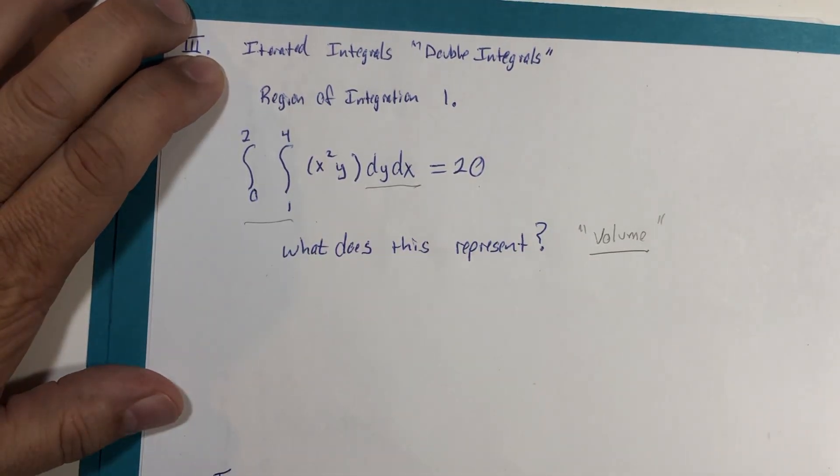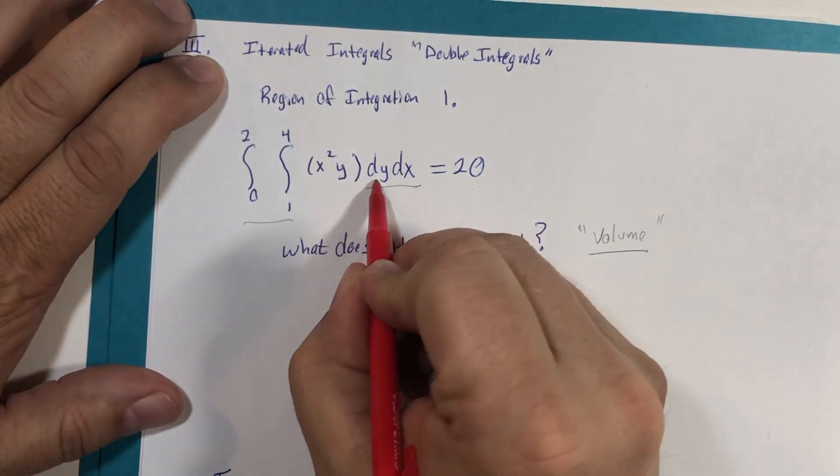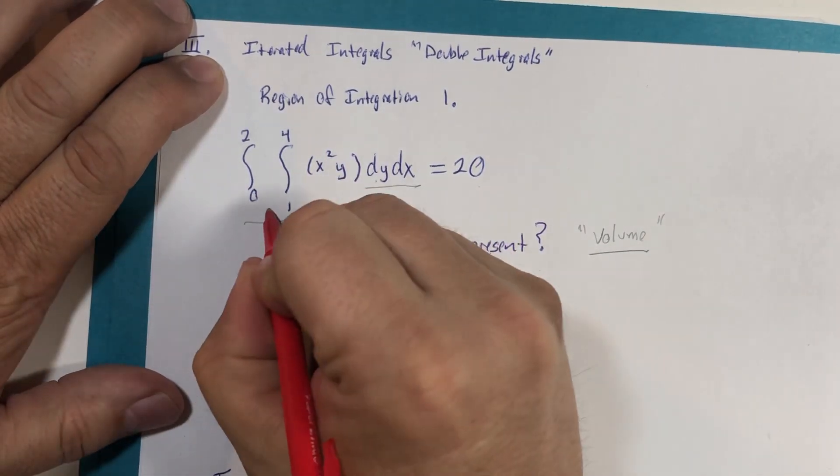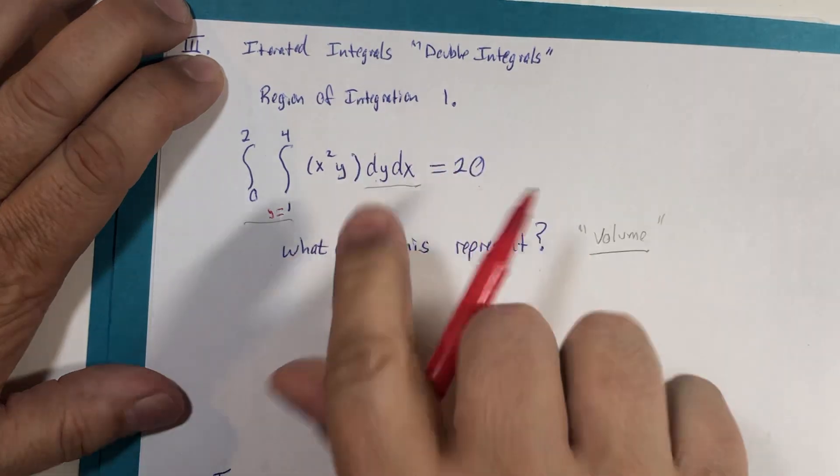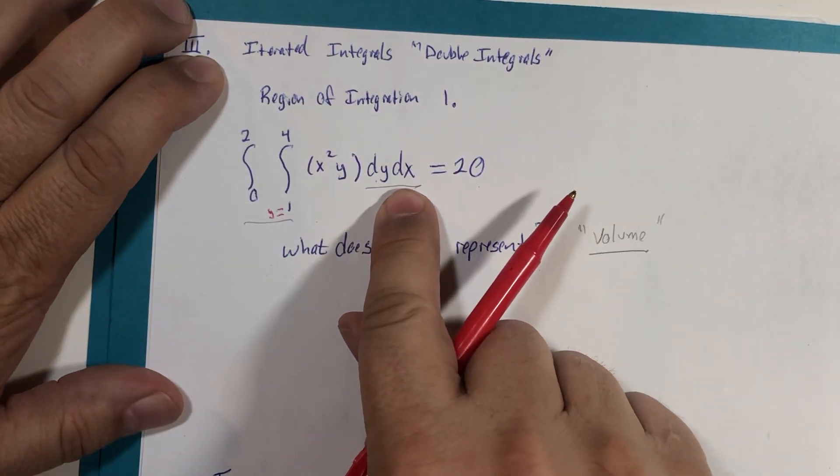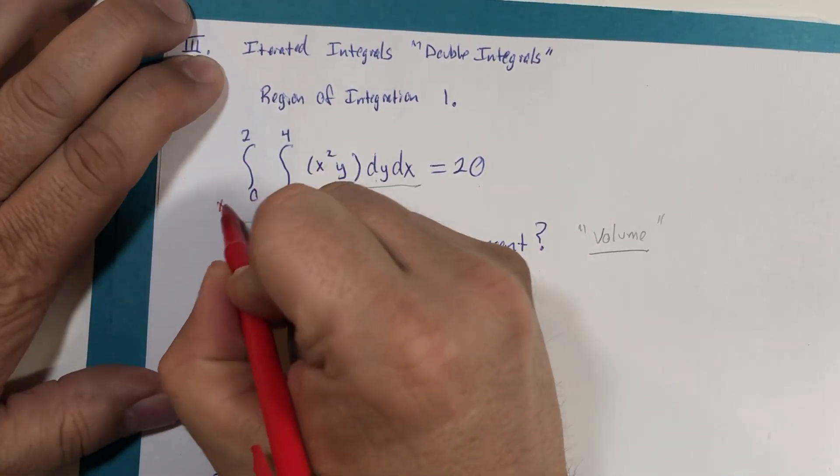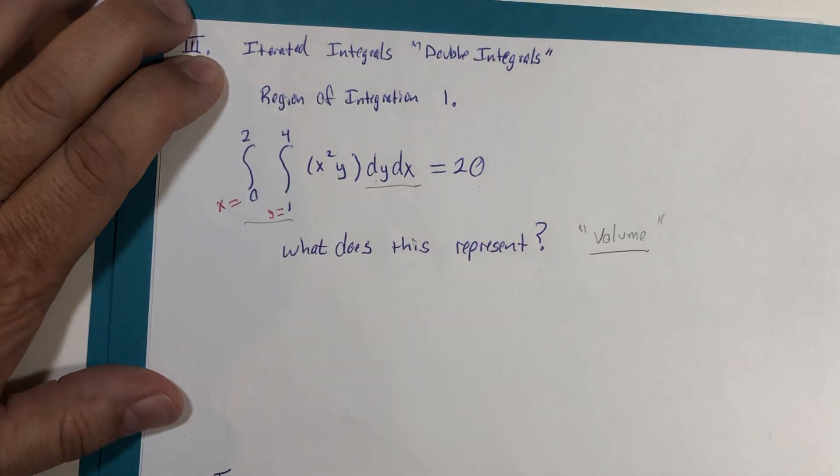As I indicated before, if this inside integration is in terms of y, then these are y boundaries. And the outside is in terms of x, and that makes these x boundaries or limits of integration.